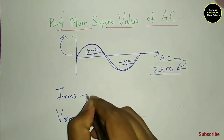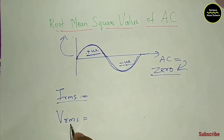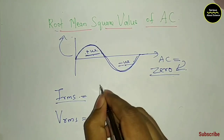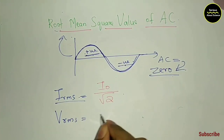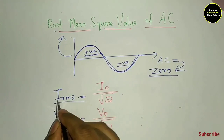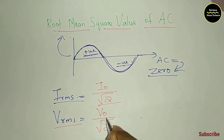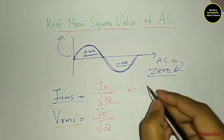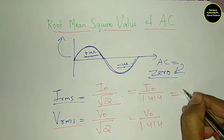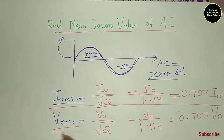IRMS and VRMS: IRMS will be equal to I₀ divided by root 2. VRMS will be equal to V₀ divided by root 2. IRMS is the root mean square value of current. I₀ divided by root 2 — root 2 value is 1.414 — so V₀ divided by 1.414, which equals 0.707 I₀. Similarly, VRMS equals 0.707 V₀.